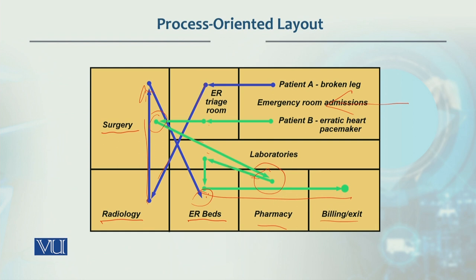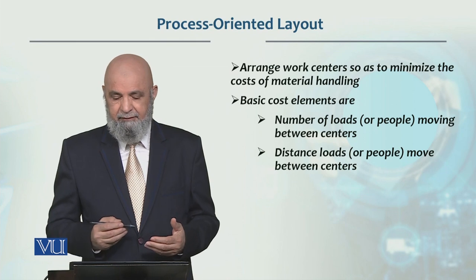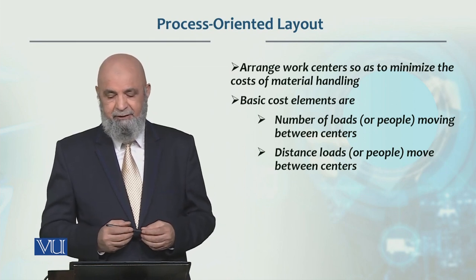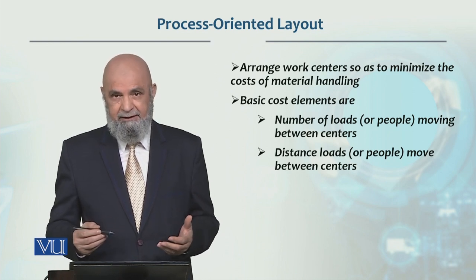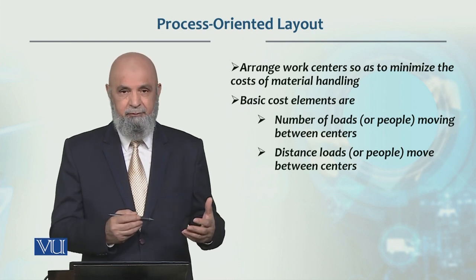So this is a process-oriented layout where many types of patients come and their movement — what we call routing — is different. Scheduling is difficult because if there is only one operation room and both patients arrive at the same time, deciding who gets the operation first makes scheduling very difficult. In this layout, space is allocated according to the process and work centers are arranged to minimize the cost of material handling and movement.